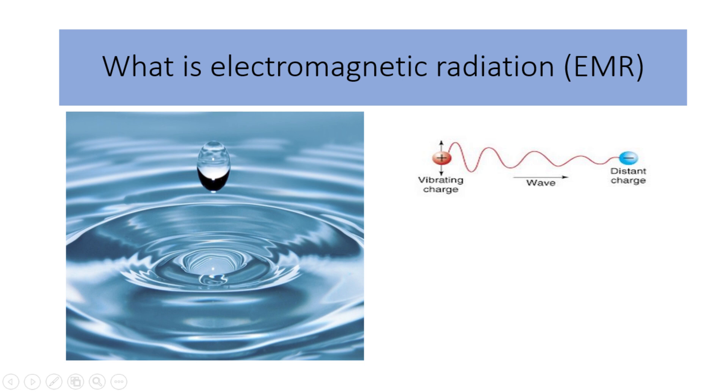To simplify the concept of electromagnetic radiation, imagine a calm lake where you drop a pebble. When the pebble hits the water, it creates ripples that spread out in all directions. Similarly, when an electrically charged particle moves, it creates a disturbance in the electric field surrounding it. This disturbance creates a ripple, just like the ripples on the water, but in this case, it's a ripple of energy called an electric field.